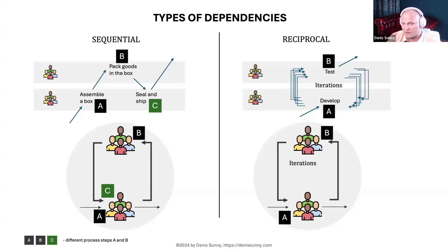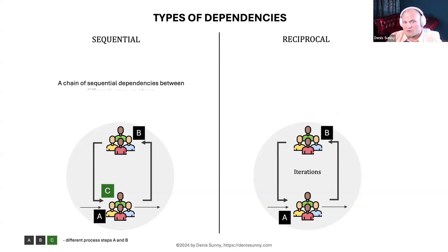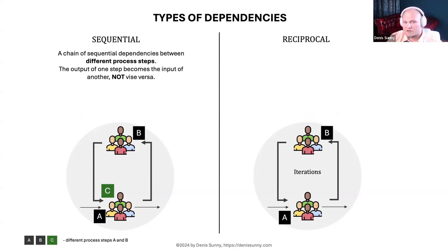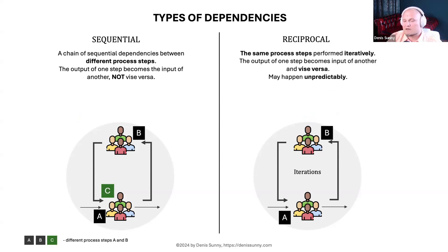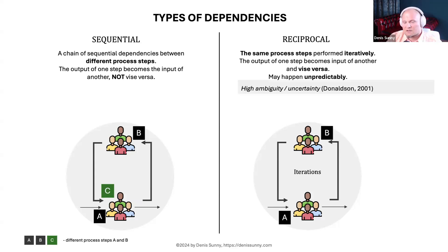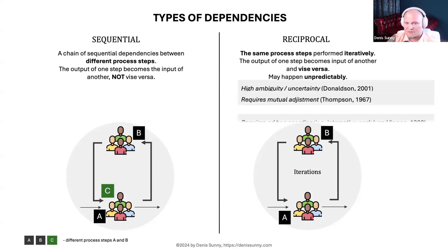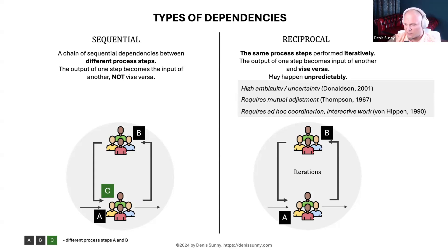The key distinction is whether the inputs and outputs swap and whether a step repeats. In sequential dependencies, there's just another step to tackle. In reciprocal dependencies, the inputs and outputs swap and a step iterates. Scientists in organizational design characterize reciprocal dependencies as having high ambiguity and uncertainty, requiring mutual adjustment, ad hoc coordination, and iterative work.